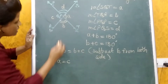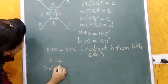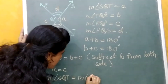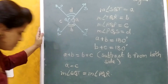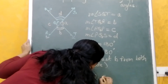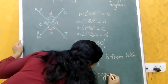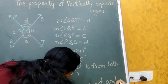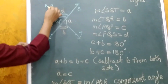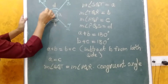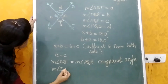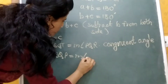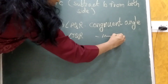Now see here, the measure of angle SQT is equal to the measure of angle PQR, and these are congruent angles. Likewise, the measure of angle SQP is equal to the measure of angle TQR, and this is also a congruent angle pair.